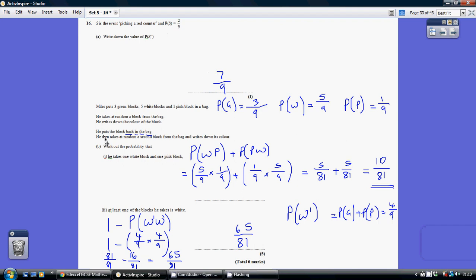Now for part B, we're told the probability of getting a green block. We work out the probability of a green block is 3 out of 9, a white block is 5 out of 9, and a pink block is 1 out of 9. Obviously the 9 coming from 3 plus 5 plus 1. Now the significance here is, having picked the first block, he puts the block back in the bag. So when you pick your second block, you're still choosing out of 9. The number of blocks hasn't gone down to 8.